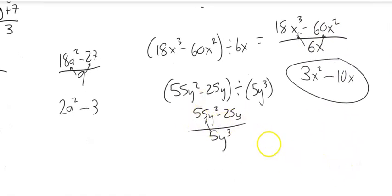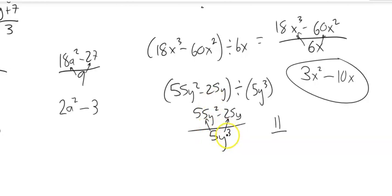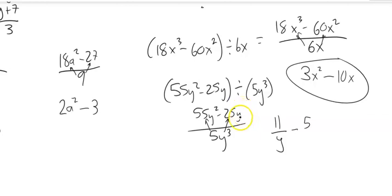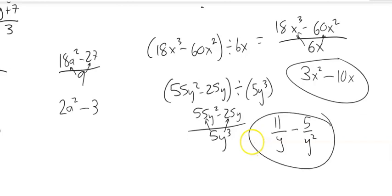For (55y² − 25y) divided by 5y³, both pieces separated by subtraction are divided by the bottom. 55 divided by 5 is 11; y² divided by y³ — the weight is in the denominator — so that's 11/y. Minus 25 divided by 5, that's 5; y divided by y³ leaves y² in the denominator, so minus 5/y².